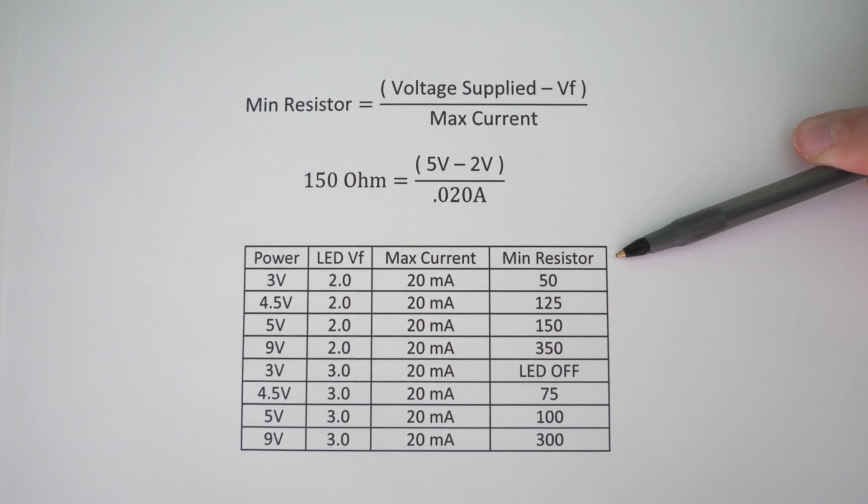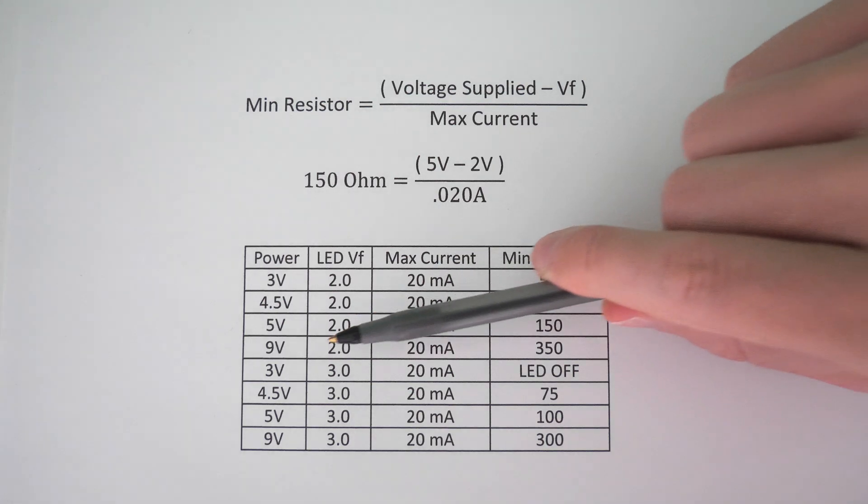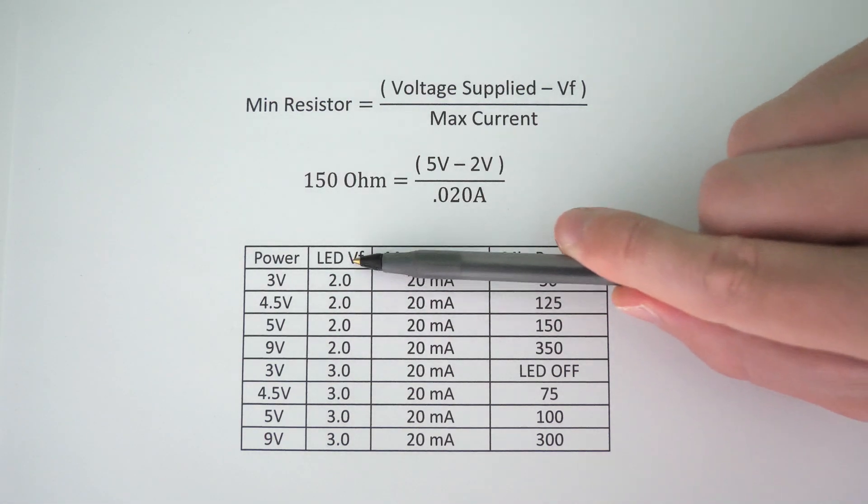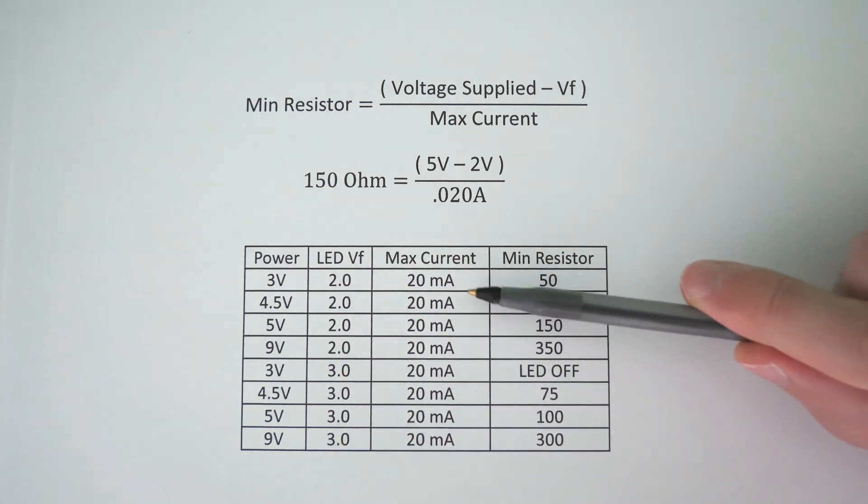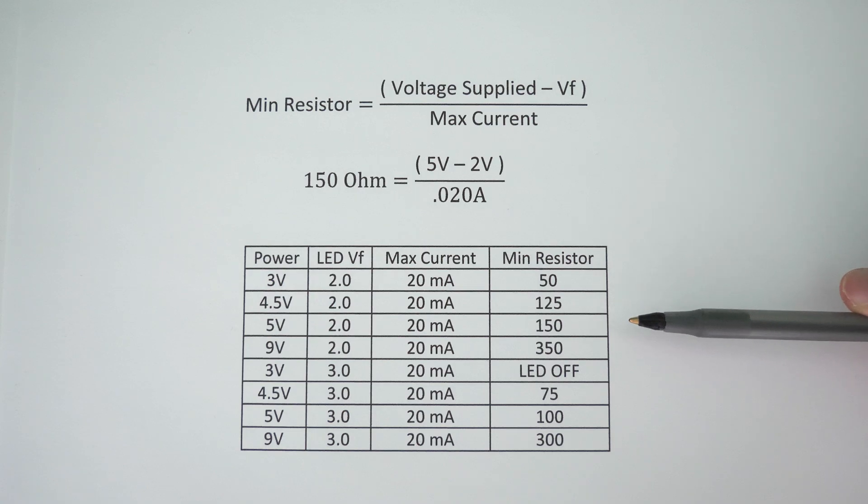What this table basically shows us, if we're using a supply voltage of 9 volts or less, and we're using typical LEDs that have a max current rating of around 20 milliamps, as long as we're using a resistor value that's 350 ohms or larger, our LEDs are going to be safe. So if you're not quite sure what size resistor to use, and you're using typical LEDs, just make sure you use a resistor that is around 350 ohms or larger.